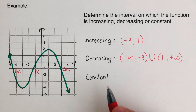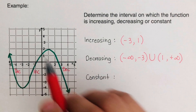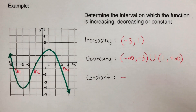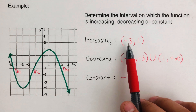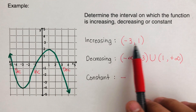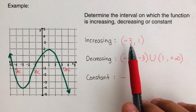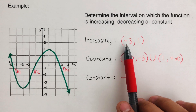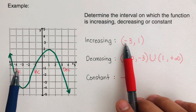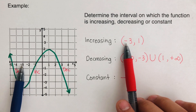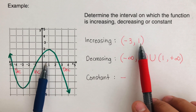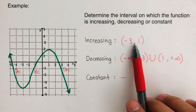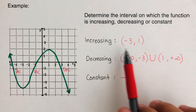As for constant — there is no horizontal line, so we leave that blank. Just to clarify again: this interval notation is not an ordered pair. These are x-values. The notation (-3, 1) means the x-values from negative three all the way to positive one. It is an interval, not an ordered pair.